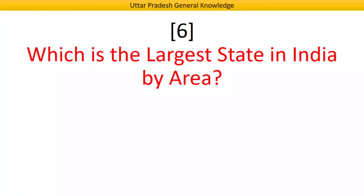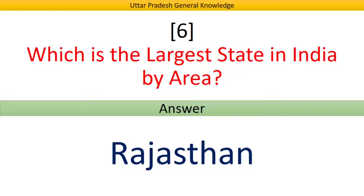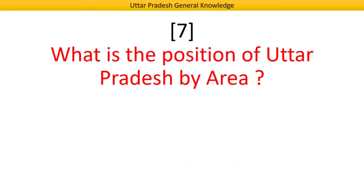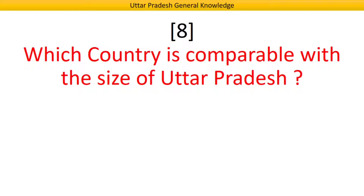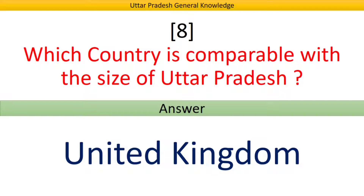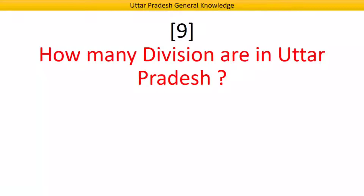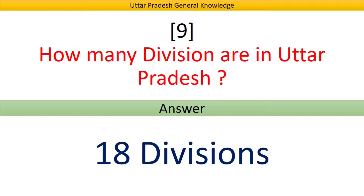Which is the largest state in India by area? Answer: Rajasthan. What is the position of Uttar Pradesh by area? Answer: Fourth. Which country is comparable with the size of Uttar Pradesh? Answer: United Kingdom. How many divisions are in Uttar Pradesh? Answer: 18 divisions.